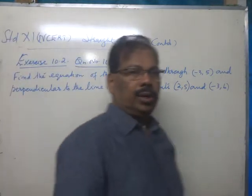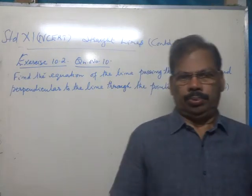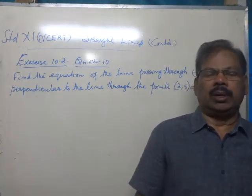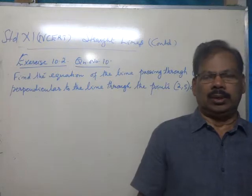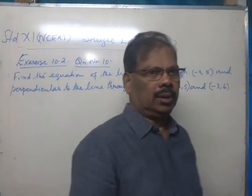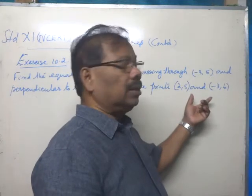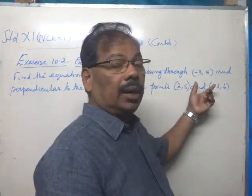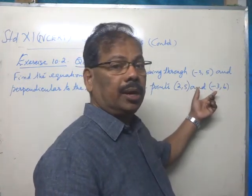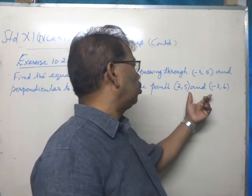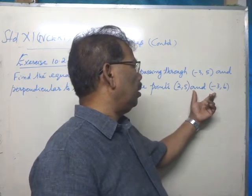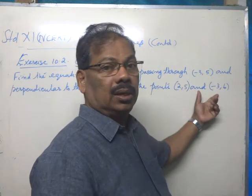If we are given a point and slope, then we can write the equation of the line. In this case, slope is not given, but it is stated that the required line is perpendicular to a line passing through the points (2, 5) and (-3, 6).